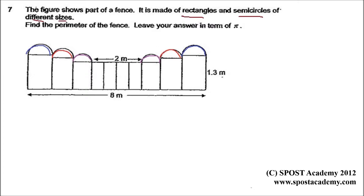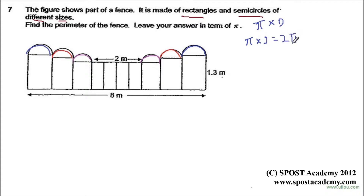First we need to know how to find the circumference of a circle. Circumference of a circle is equal to pi times d. So if the diameter of a circle is 2, the circumference will be pi times 2, which gives us 2pi. If the diameter is 3, then it will be pi times 3, which gives us 3pi. And if the diameter is 4, it will give us 4pi.